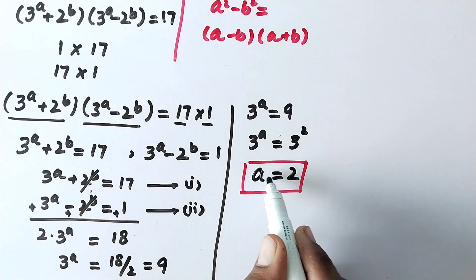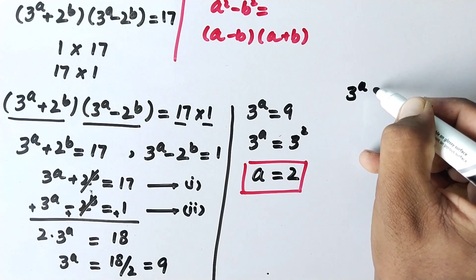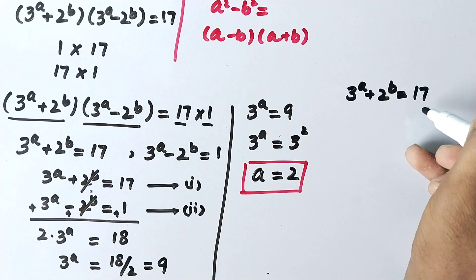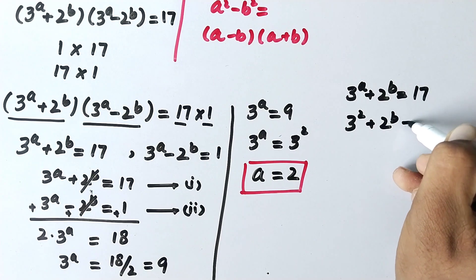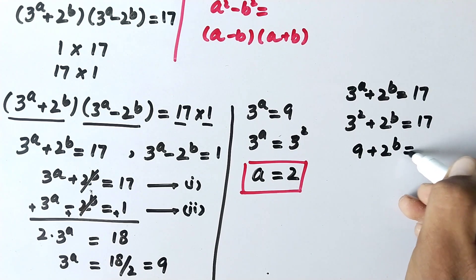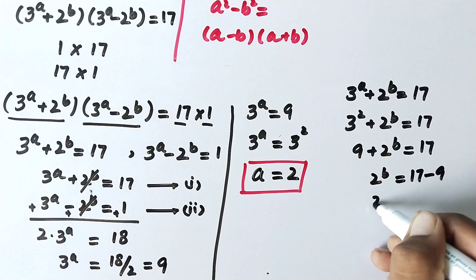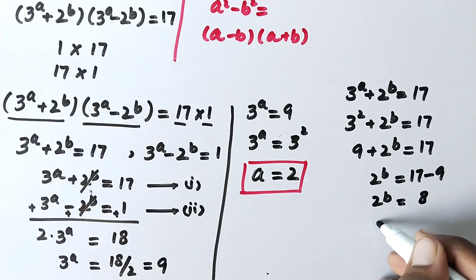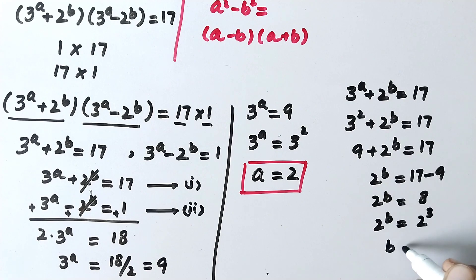Now to find the value of b, we put the value of a into equation 1: 3 to the power a plus 2 to the power b equals 17. With a equal to 2, we get 3 squared plus 2 to the power b equals 17, so 9 plus 2 to the power b equals 17, giving 2 to the power b equals 8, which is the same as 2 cubed. Since the bases are the same, we equate powers: b equals 3.